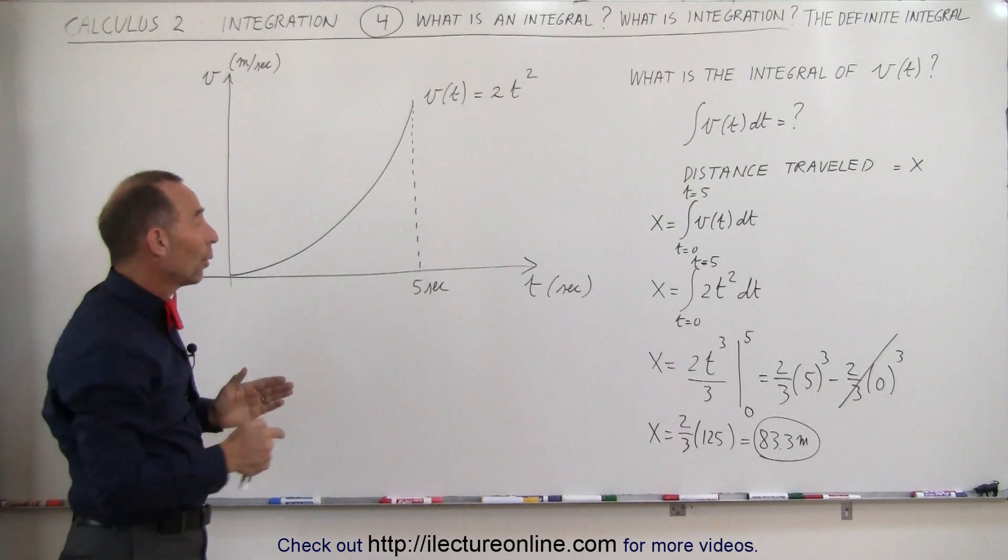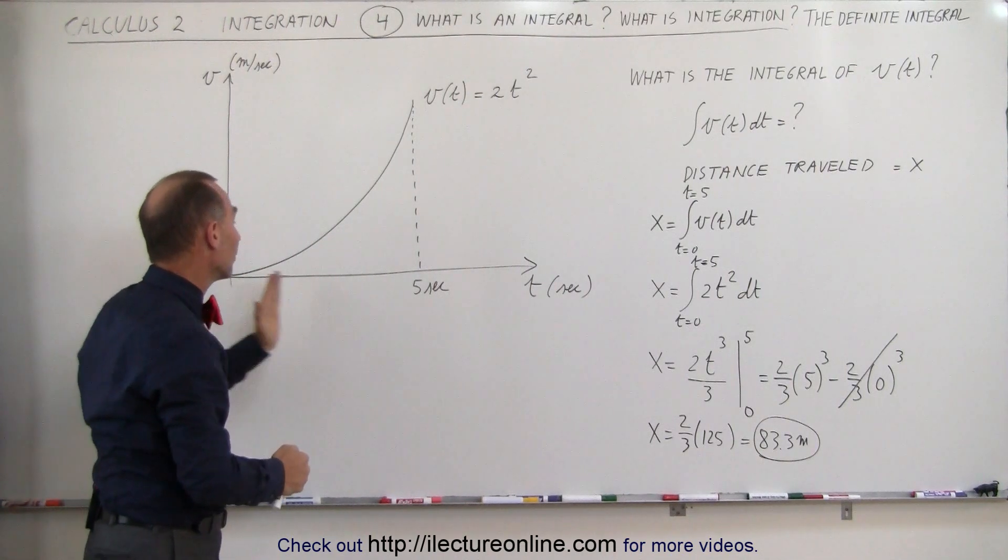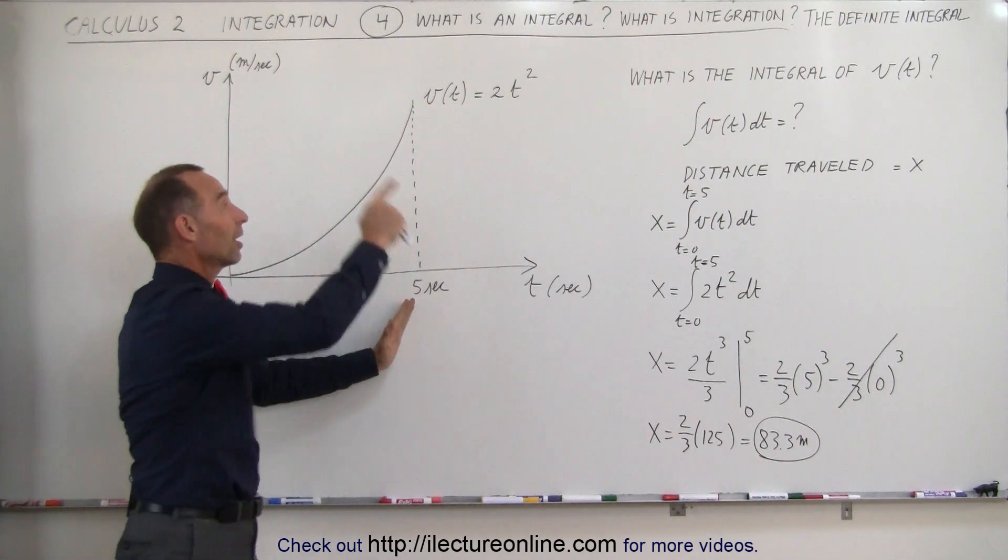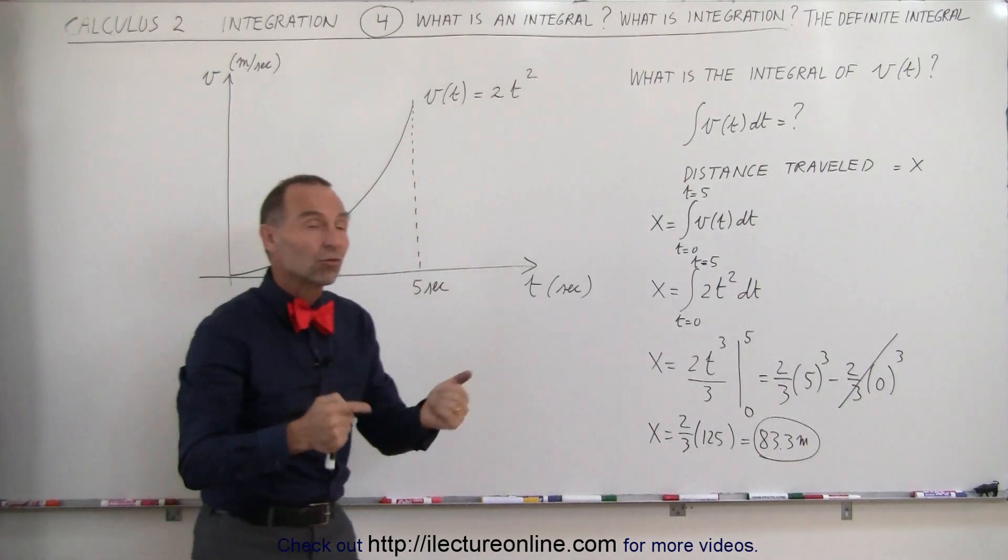and want to find out what the area under the curve means between 0 and 5 seconds, in this case, the area underneath the velocity curve means distance traveled.